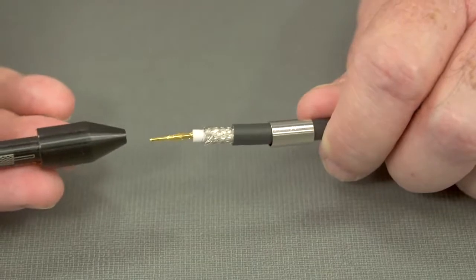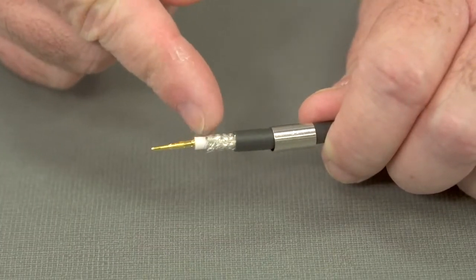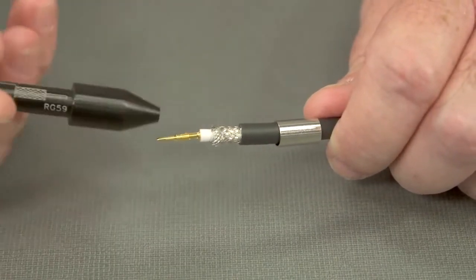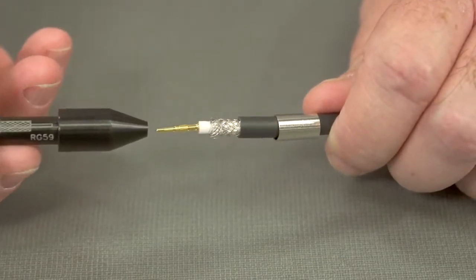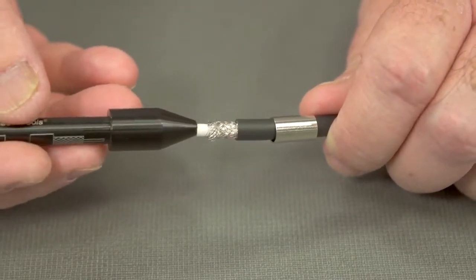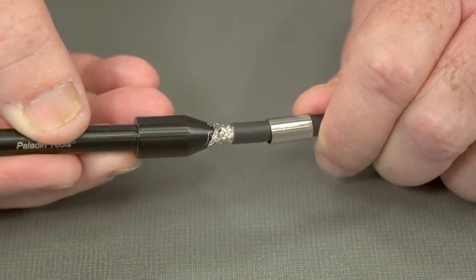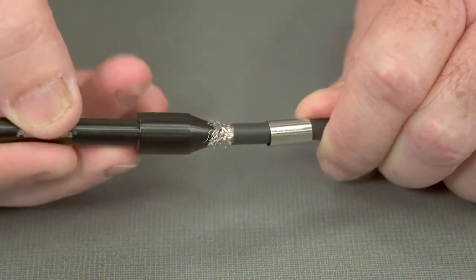Now we'll use our flaring tool to flare out the braided shield for an RG-59. Slide it over the dielectric and give it a push so it pushes it out nice for us.